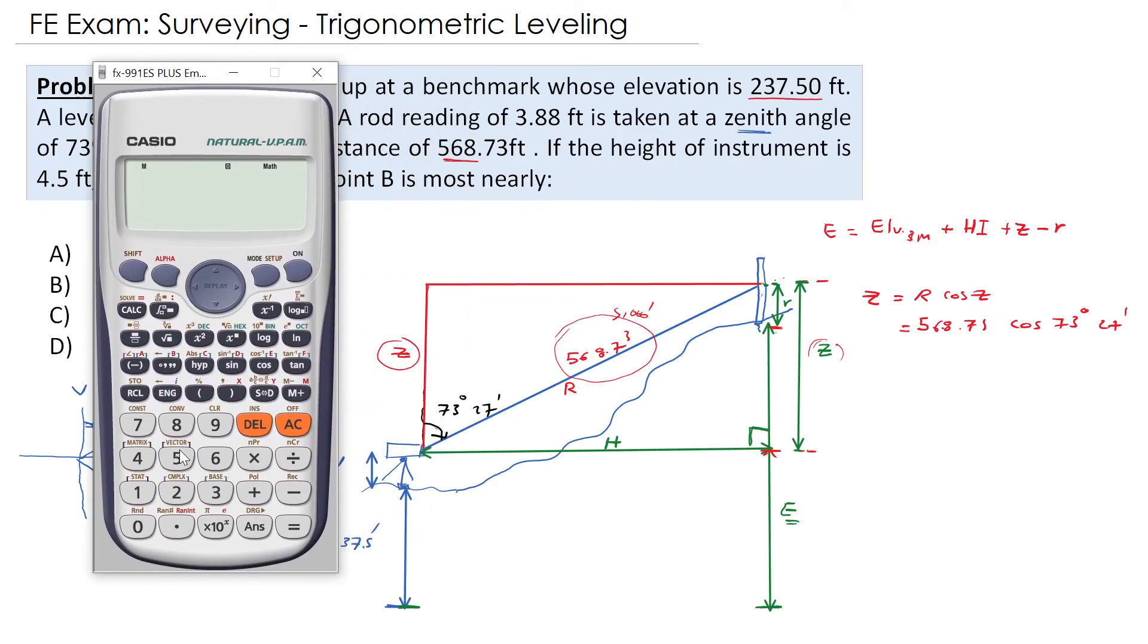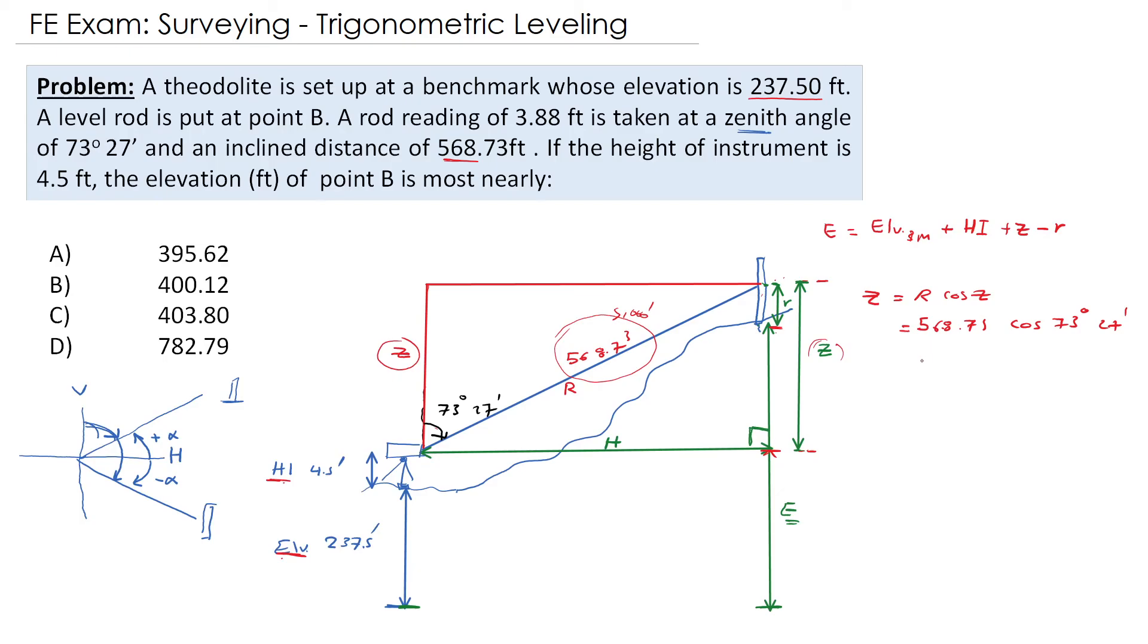So we have 568.73 multiplied by cosine 73 degrees and 27 minutes, and that is 162.00. So we have z now.